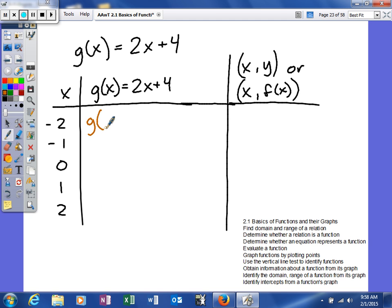To find this, we're going to find g of negative 2. So 2 times negative 2 plus 4. When you do that, you'll get negative 4 plus 4, so you'll get 0. To write our ordered pair, we'll say negative 2 comma 0.